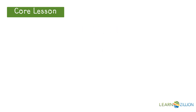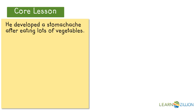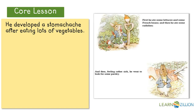Let me think of my first reason: Peter developed a stomach ache after eating lots of vegetables. I listed that on the top of my sticky note. And I need to think about how and why this reason supports my opinion that Peter will never go back into the garden. I am going to reread that section of the text, right after Peter eats the vegetables, to find my evidence that supports my reason and opinion.